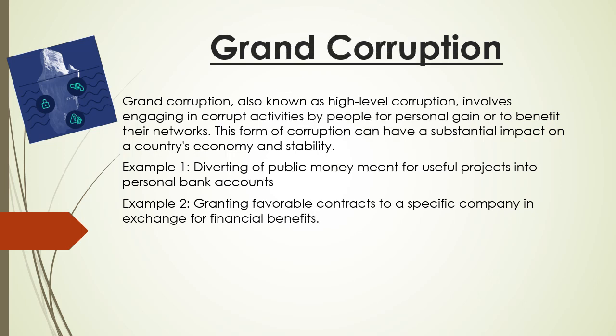The second form of corruption is grand corruption, also known as high-level corruption. It involves engaging in corrupt activities by people in power for personal gain or to benefit their networks. This form of corruption can have substantial impact on a country's economy and stability. First example: diverting public money meant for useful projects into personal bank accounts. Second example: granting favorable contracts to a specific company in exchange for financial benefits.